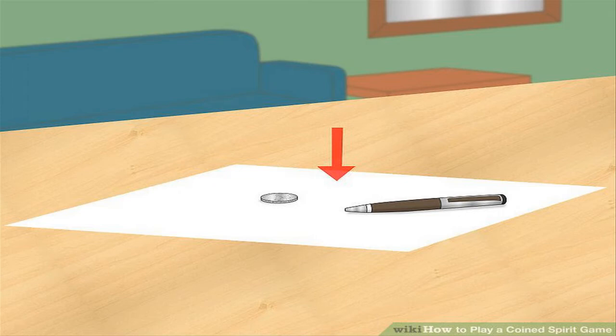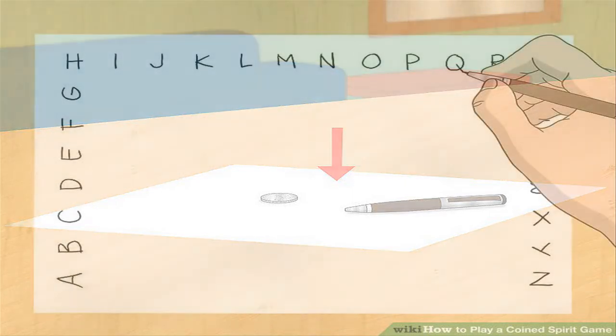Method 1: Making the game board. Find a large white sheet of paper, a pen, and a coin. The paper should be no smaller than 8x11 to allow room to write everything on the game board and allow enough room for the coin to move. You can use any coin, but choosing a silver coin may help to repel the evil spirits.